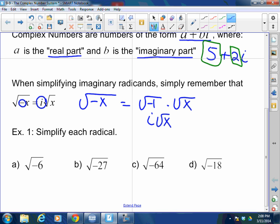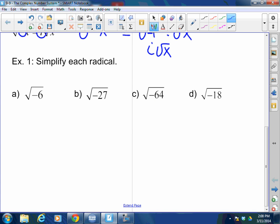For example, square root of negative 6. Can't break anything down here, but I sure can get rid of that negative. So it's going to be i square root of 6. Negative 27. Don't get confused by the negative. Get rid of the negative immediately by putting an i outside. Now, break this down. This is 9 times 3. So square root of 9 is 3. So it's 3i square root of 3.